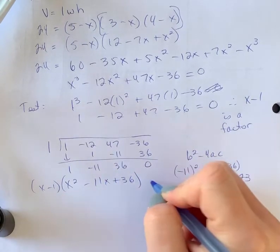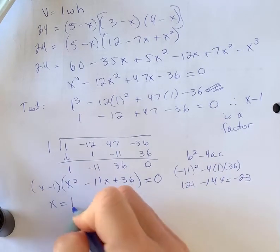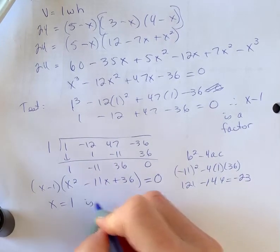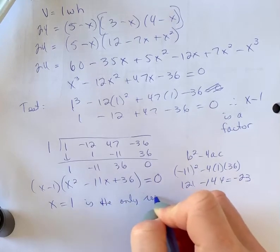So your factors are only this. So this is my factored version. I need to make sure it's set to zero because I'm solving. So x equals 1 is the only root. So it's the only root, so we don't have to worry about rejecting anything.